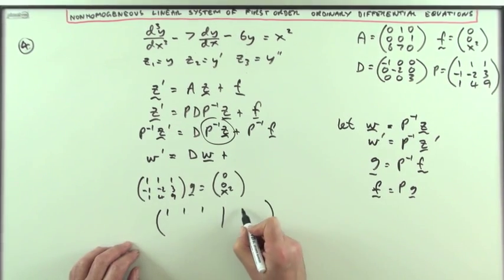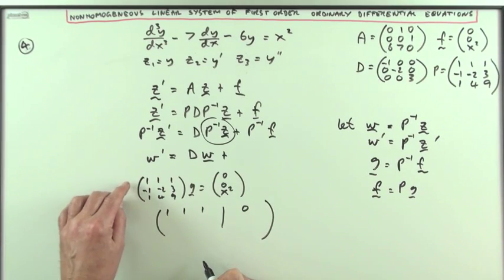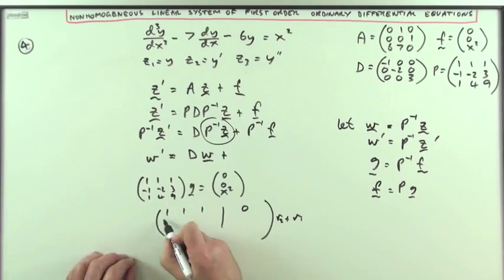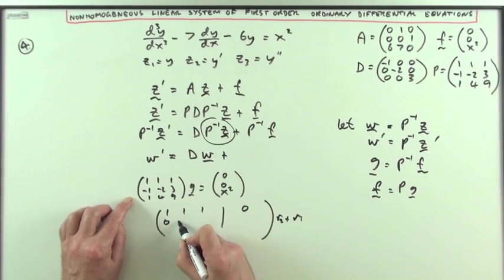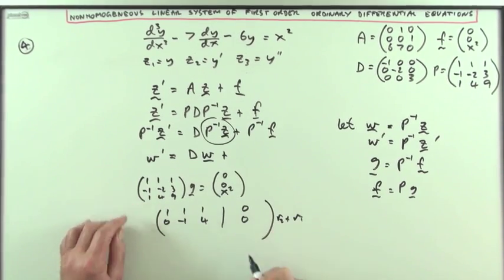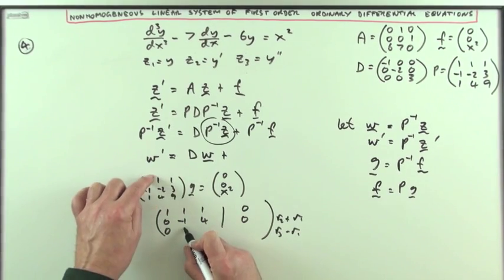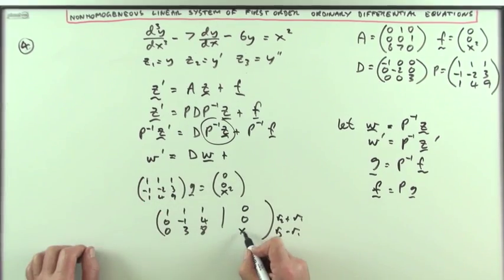I'll do the first step in it. So the first, I've got 1, 1, 1, 0. Row 1 plus row 2. Row 2 plus row 1 is what I'll say rather, will be a 0. Negative 1, 4 and still a 0. And for this one, row 3 minus row 1 will be a 0, 0, 3, 8, x squared.